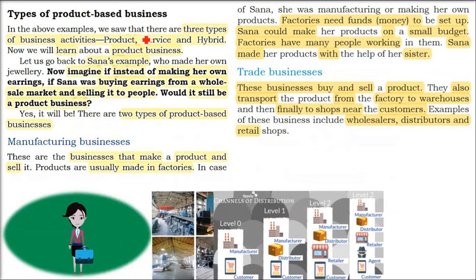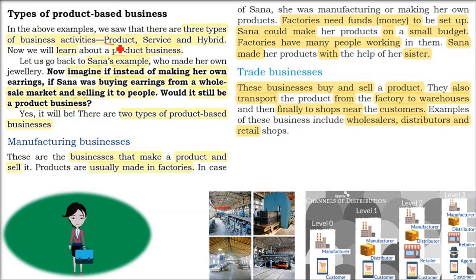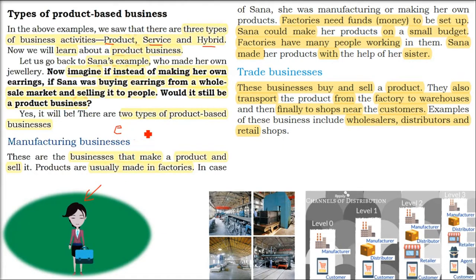So there are three types of business activities: product, service, and hybrid. Product means a product is involved; service means your skill or help. Hybrid is a combination of the two. For example, if Sana is just buying earrings from the wholesale market and selling them — not making them at home — that is a product-based business because a product is involved: she is buying and selling.